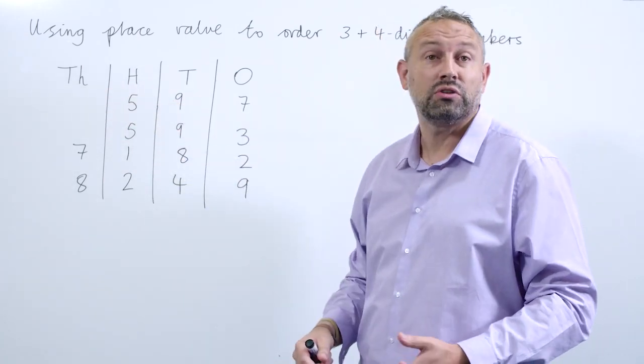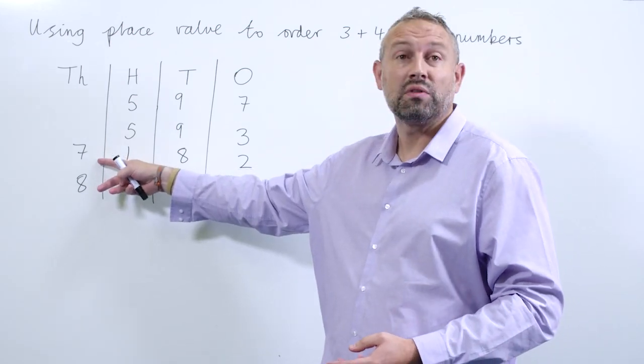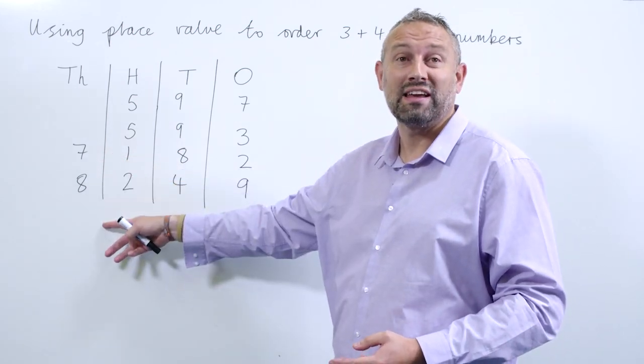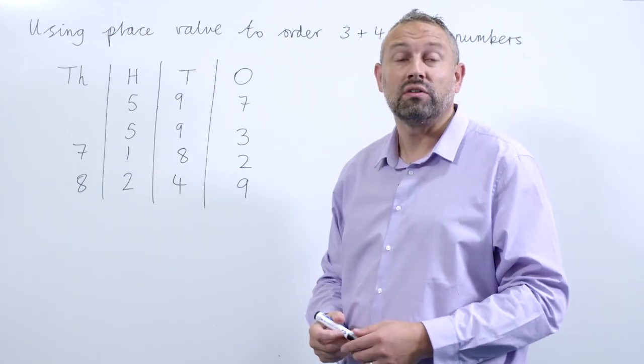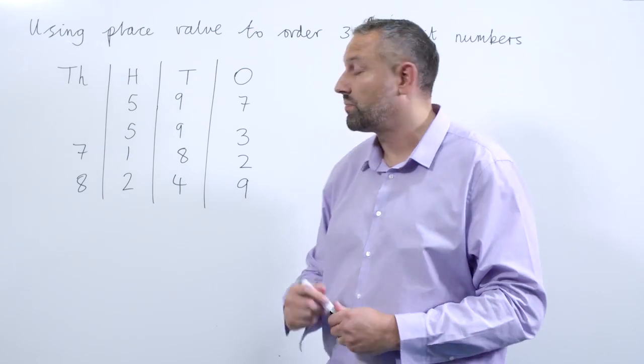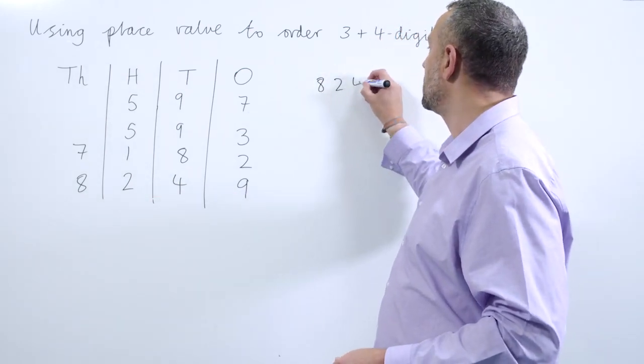So here we have a number beginning with seven and a number beginning with eight. So this number here, eight, is larger than seven, so that's the larger value. So that's the largest number, 8249.